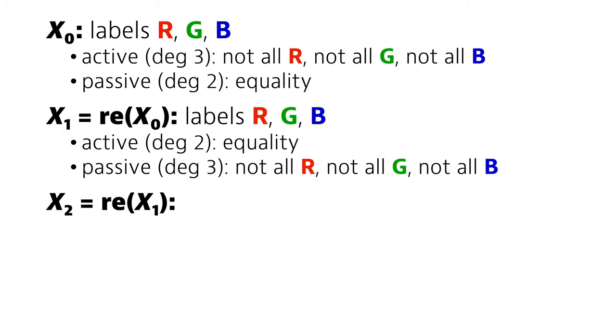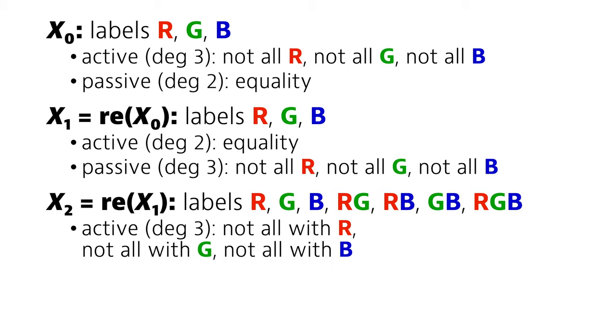Let's do round elimination again. Now we'll get problem X2. Now this problem is something a lot more interesting. Here is one interpretation of it. In this problem, your task is to label edges with sets of colors. Active nodes have the following constraint. There has to be one set that doesn't contain red. And one set that doesn't contain green, and one set that doesn't contain blue.